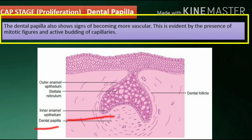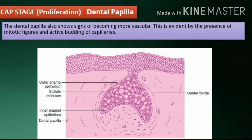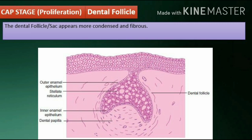Dental papilla: The dental papilla also shows signs of becoming more vascular, evident by the presence of mitotic figures and active budding of capillaries. Dental follicle: The dental sac appears more condensed and fibrous.